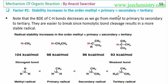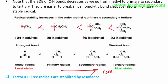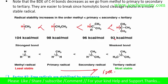Factor 1: Stability increases in the order methyl < primary < secondary < tertiary. Tertiary has higher stability than secondary, then primary, then methyl. The bond dissociation energy values are 104, 98, 96, and 93 kcal/mol respectively. As bond dissociation energy decreases going from methyl to tertiary, stability increases — tertiary free radicals are the most stable.